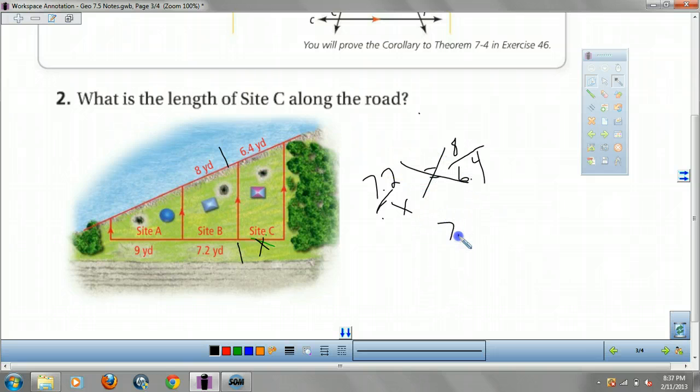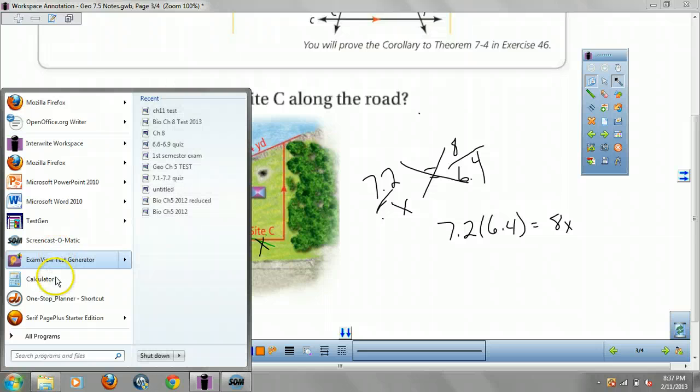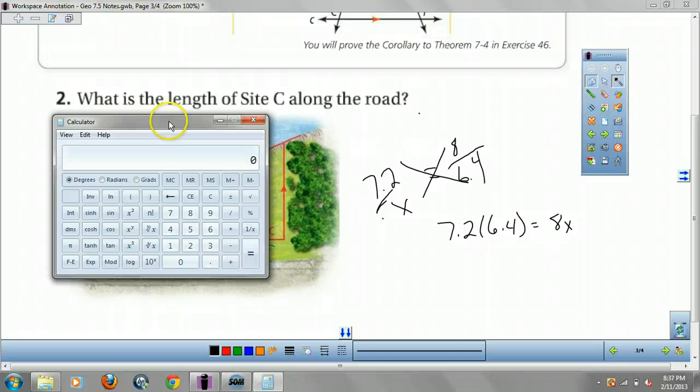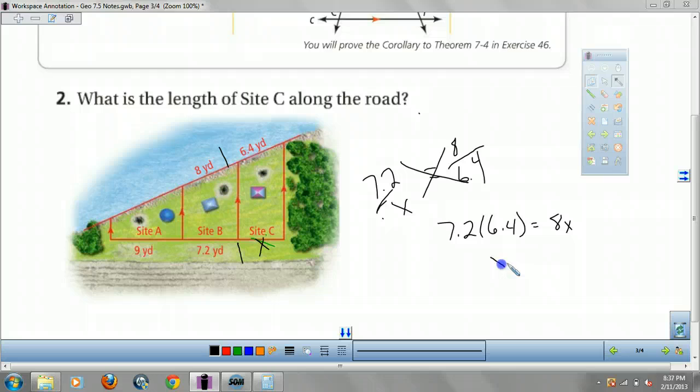Cross multiply. 7.2 times 6.4 equals 8X. So I grab my handy-dandy calculator. What's 7.2 times 6.4 equals 46.08. Then we have to divide both sides by 8. 5.76 yards. That'll label.